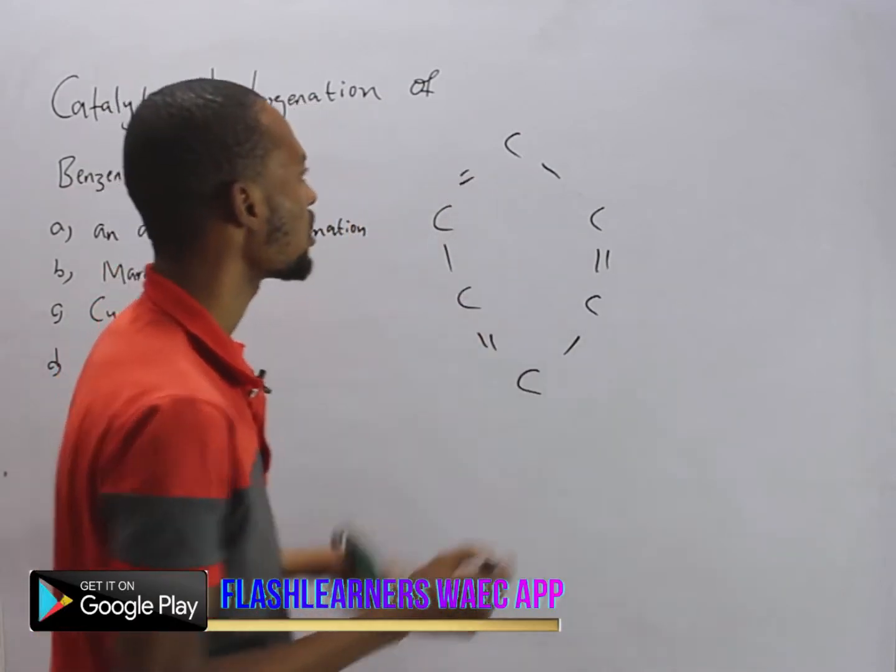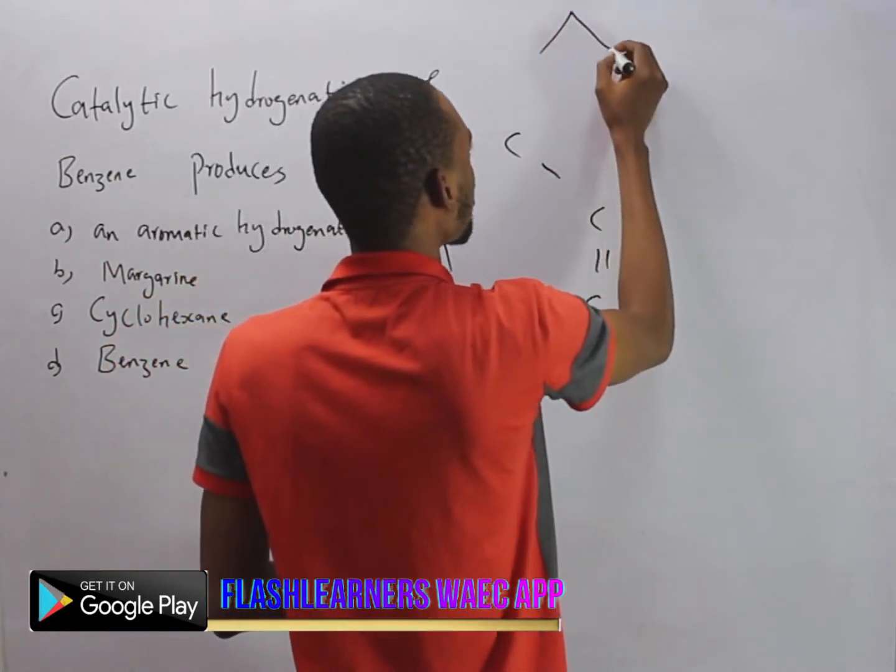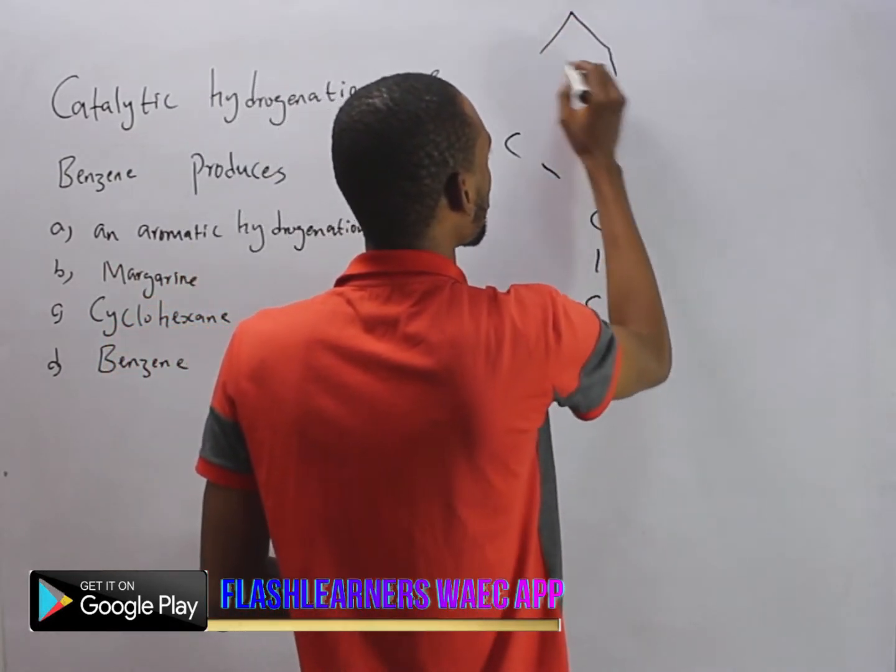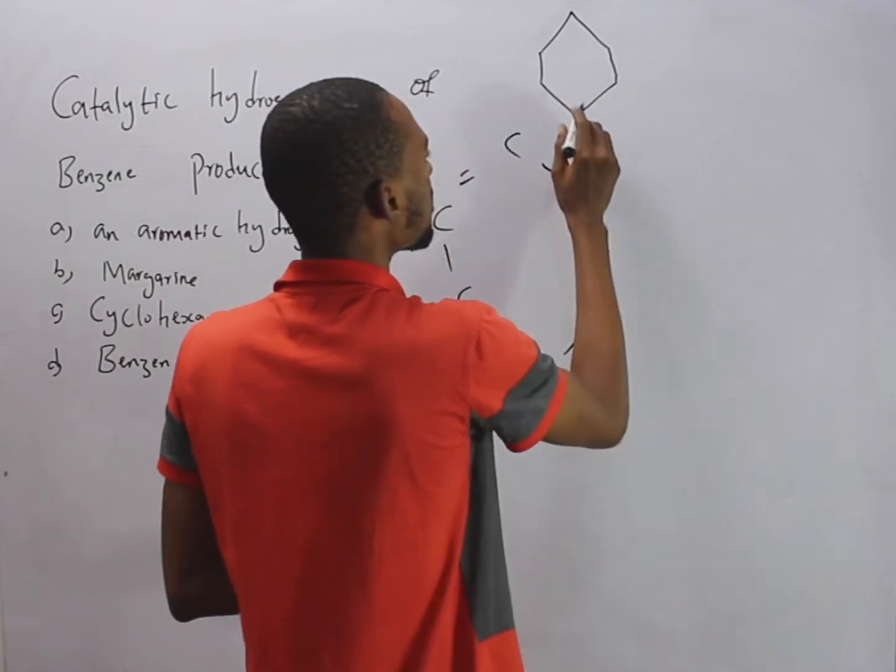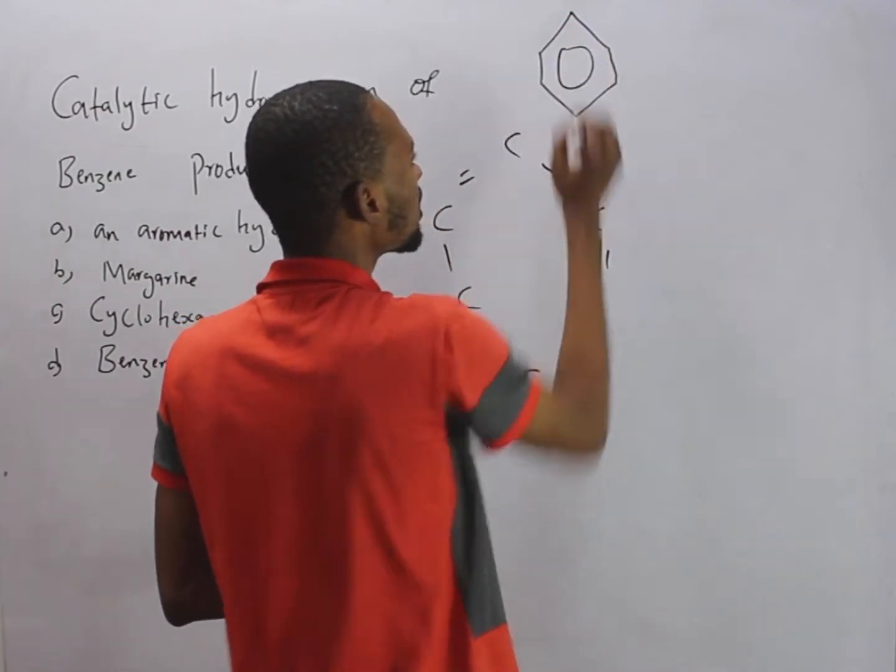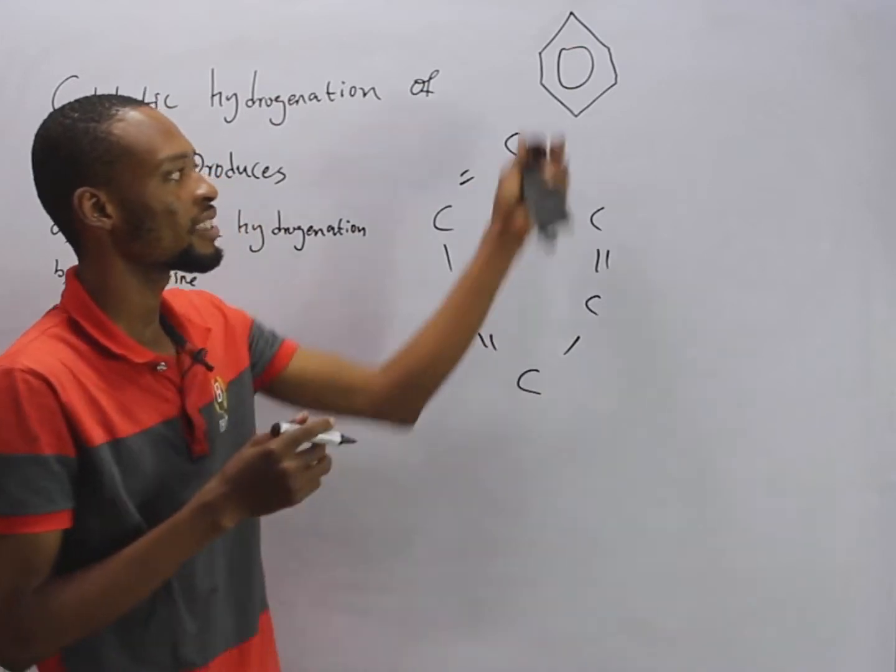This is benzene, or you can represent something like this. So here this is carbon, carbon, carbon, and this is the alternate double bond. That's benzene.